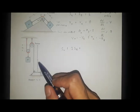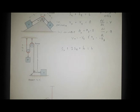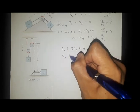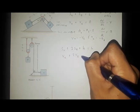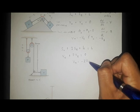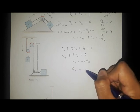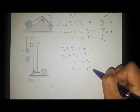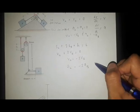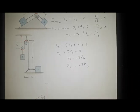Since the height is fixed, it is constant. Taking the time derivative of the equation, we have V_A plus 2V_B equals 0. Therefore, V_A equals negative 2V_B. Similarly, for the acceleration, A_A is equal to negative 2A_B. That is the relationship between velocity and acceleration for the second figure.